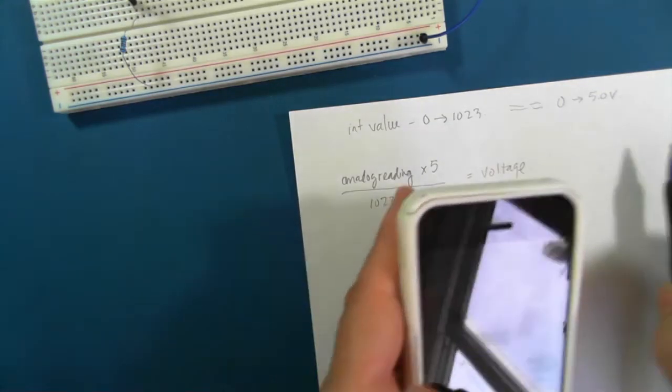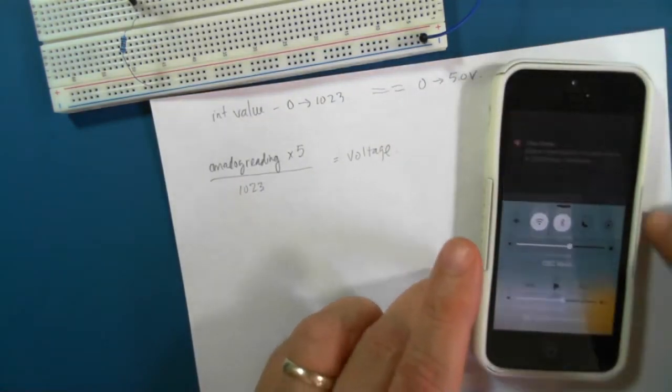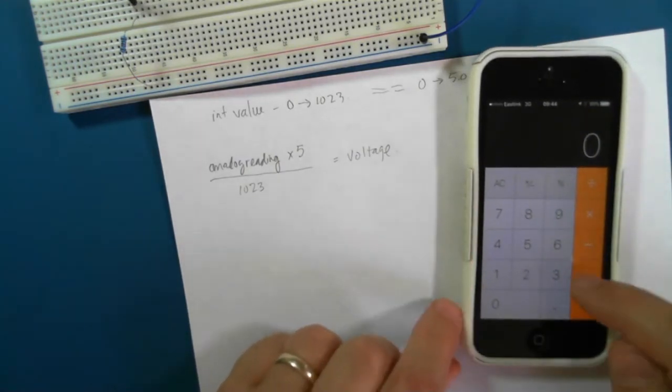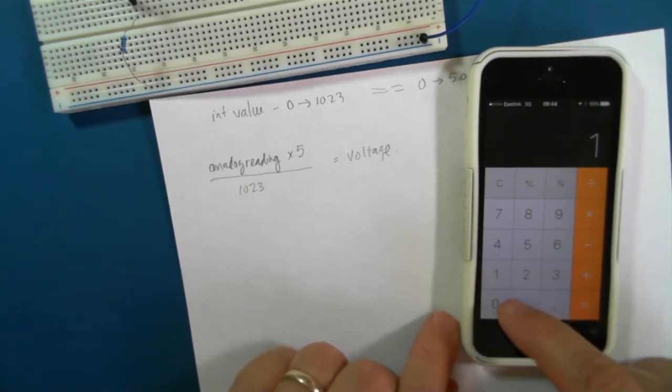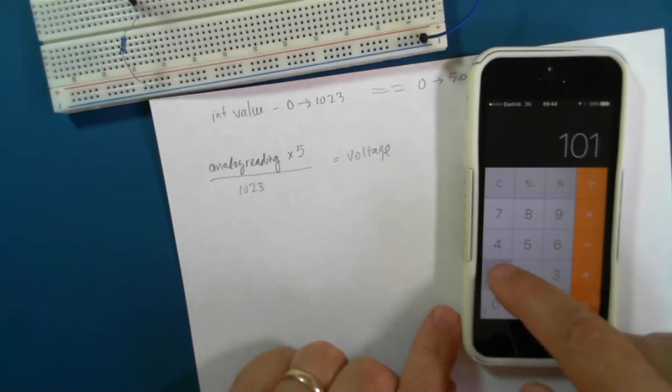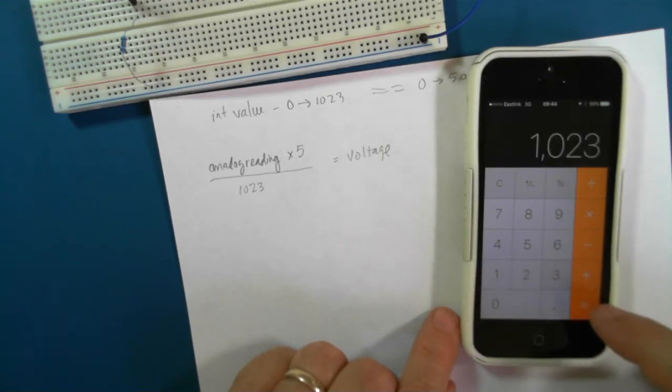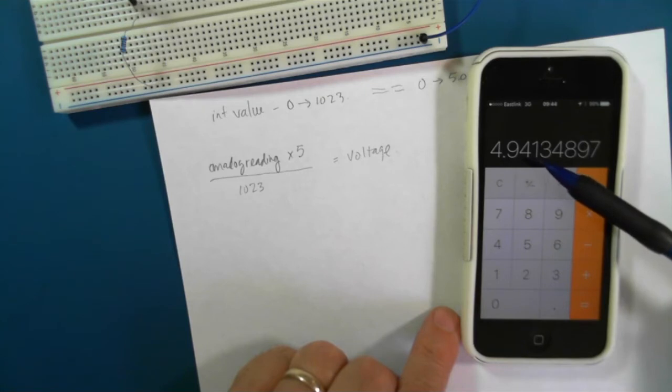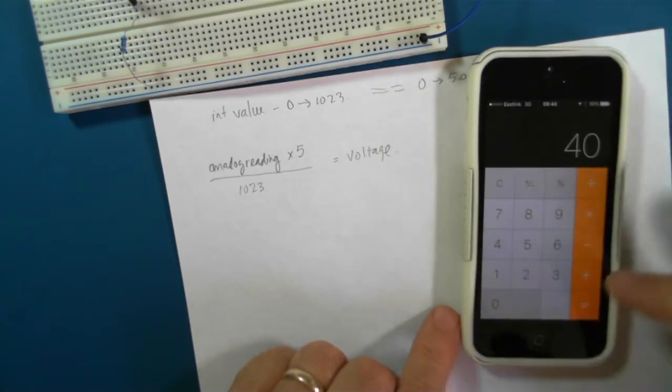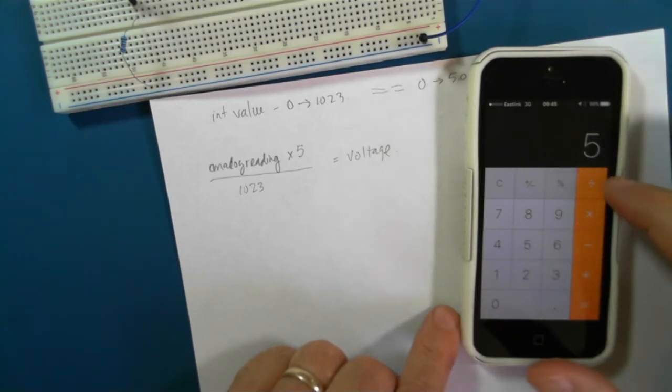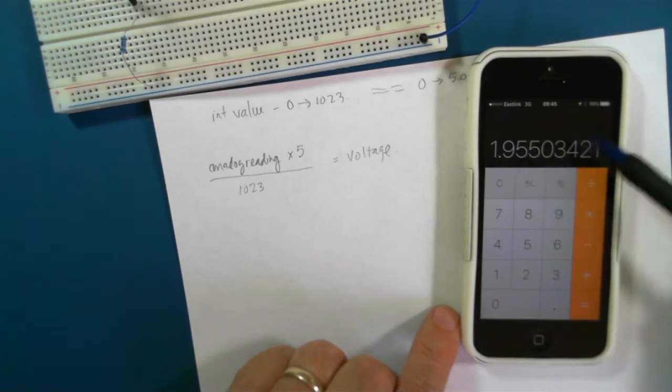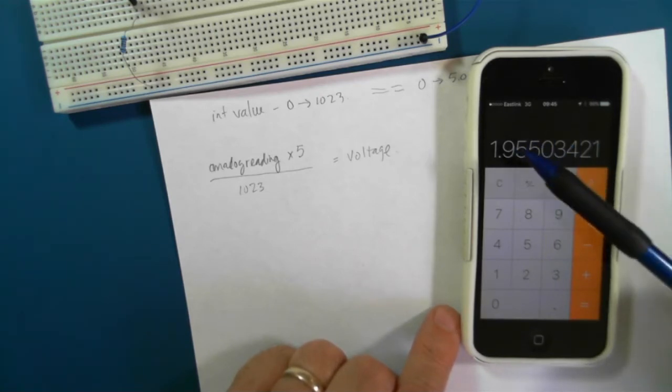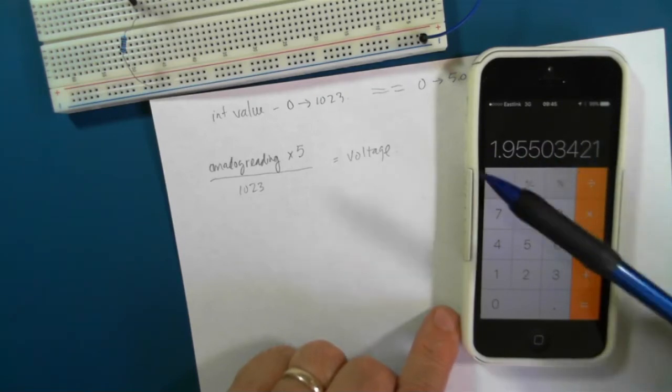so let's try that. So we had 1011 times 5 divided by 1023 that's about 4.9 volts. We had also a value of around 400 times 5 divided by 1023 that was about 1.9 volts. We could go back and we could check that on the multi-tester and those values would be quite similar. The analog to digital conversion on the Arduino is quite accurate.